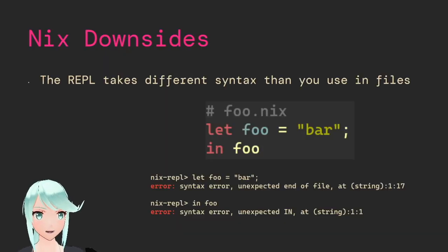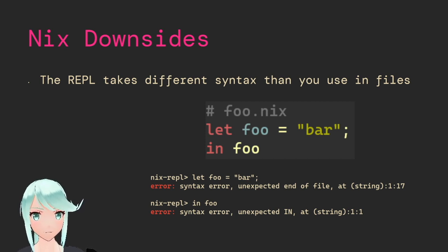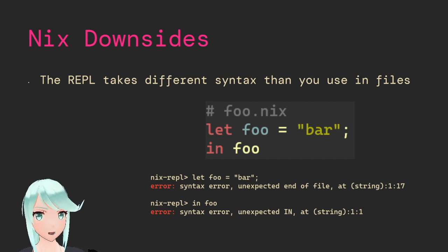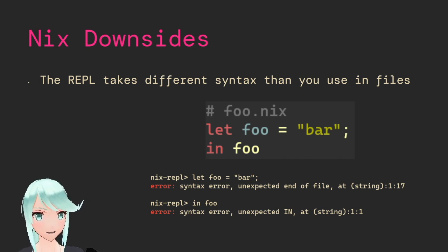Another paper cut is that Nix does have a REPL so that you can hack up things quickly and get to learn the language a bit better. However, the REPL can take different syntax than you can put in files. If I want to declare a variable like foo equals bar and then use it somewhere, in the REPL I have to do foo equals bar without a semicolon or without a let. That can be very annoying, because you can hack up something in a REPL and then your instinct is to paste it into a file, but you need to edit it and it's not entirely obvious at first.